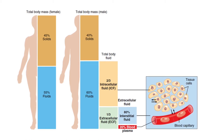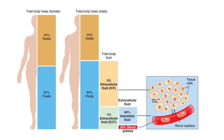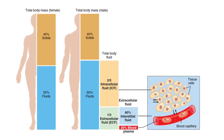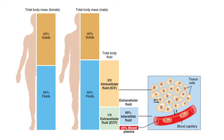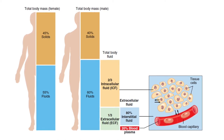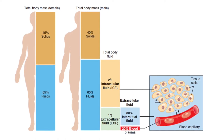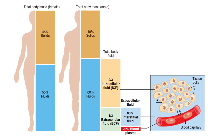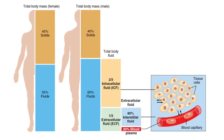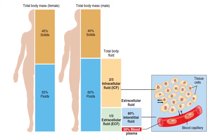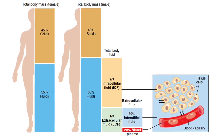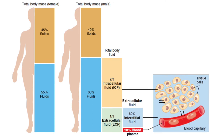Body fluid sits in two body compartments. Two thirds of the total body fluid found within our cells is known as intracellular fluid. The remaining third of the total body fluid is extracellular fluid and it sits outside the cell, such as interstitial fluid, plasma and transcellular fluid.